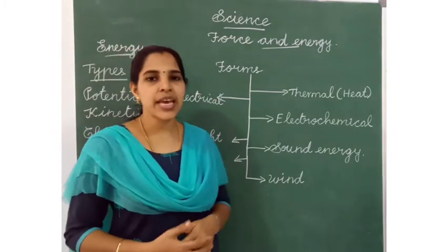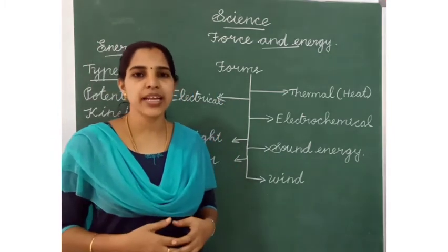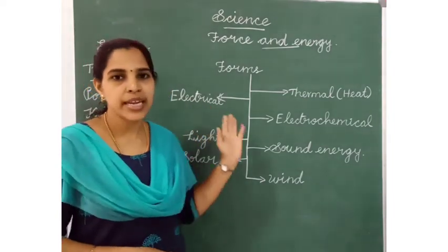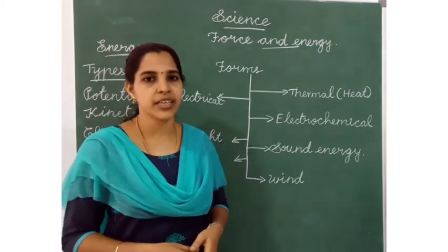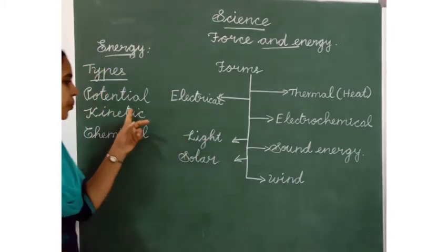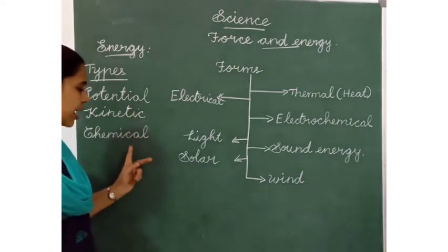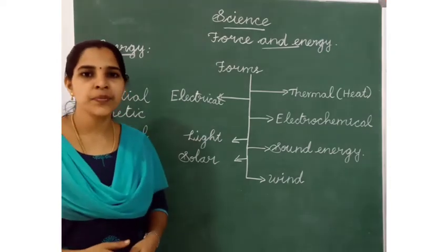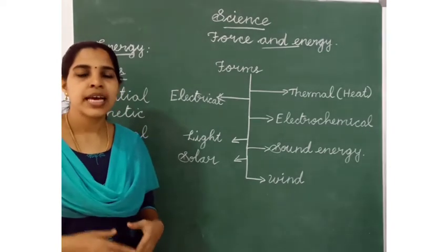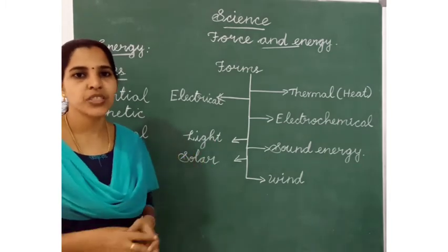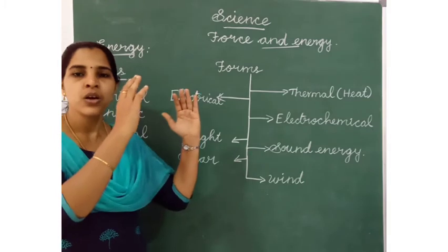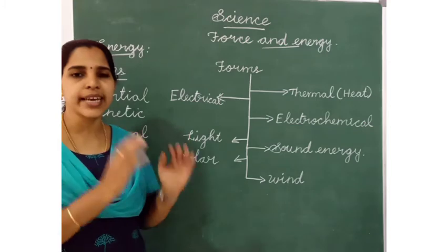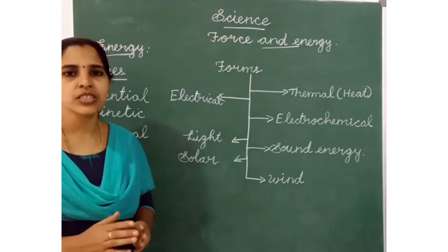Now, the types of energy. How many types of energy are there? Energy is divided into three types and different forms. What are the three types of energy? Potential energy, kinetic energy, and chemical energy. What is the meaning of potential energy? Potential energy means energy stored in an object, stored in a particular place. The object will not move — it takes a position. That is called potential energy.